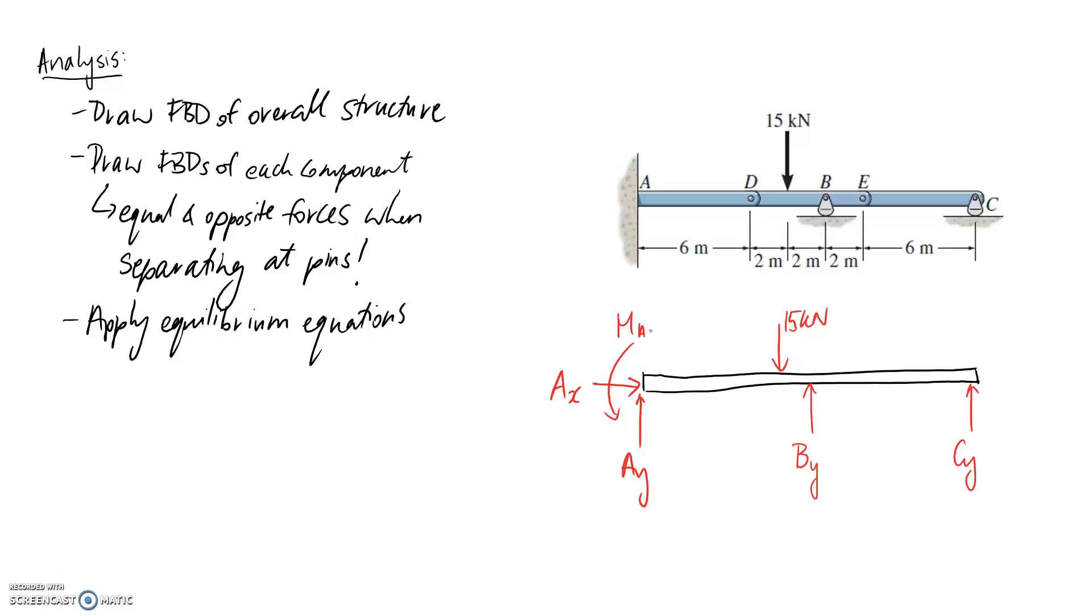All right, so that's the free body diagram of the overall structure. And hopefully you can see that if you did try to apply your equilibrium equations on this, you'd find that you have far too many unknowns, then you have to be able to solve it. So we've got three equilibrium equations, which means we can only solve for a maximum of three unknowns off only one diagram. This one we have one, two, three, four, five, so it's not possible.